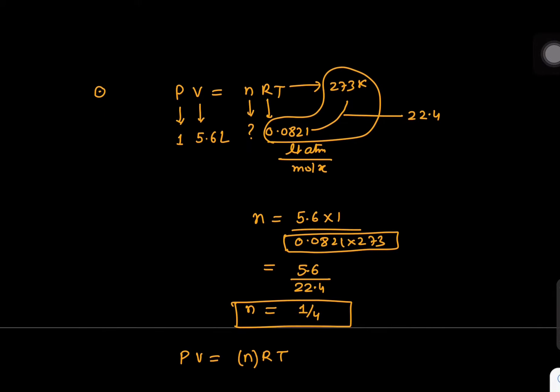We can use P is 1, V is 5.6, n is unknown, R is 0.0821, T is 273. You can multiply these two numbers - please remember this is 22.4.